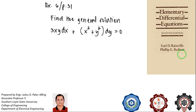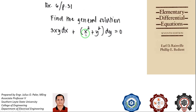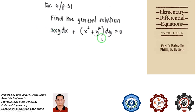First, we need to verify that we are dealing with a homogeneous differential equation. Looking at our M term, which is 3xy, and our N term, which is x squared plus y squared, we can see that the M term is second degree and the N term is also second degree. So indeed, this is a homogeneous differential equation. We must confirm this before proceeding because the solution method is specific to this type.